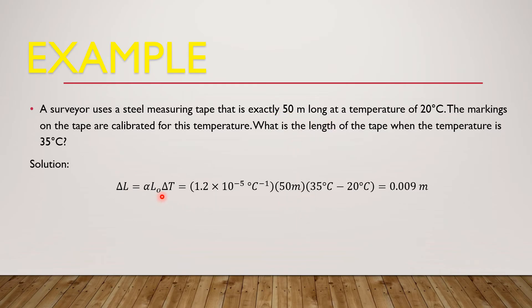Given the initial length which is equal to 50 meters and the change in temperature from 20 to 35 degrees Celsius. So basically 35 degrees Celsius is my final temperature and 20 degrees is my initial temperature. So the delta L for the change in length is equal to 0.009 meters. Now take note, the problem is to solve for the length of the tape when the temperature is 35 degrees Celsius.